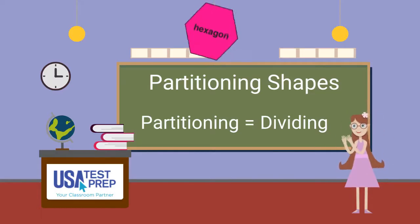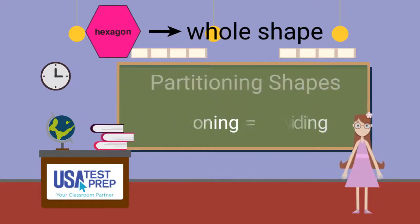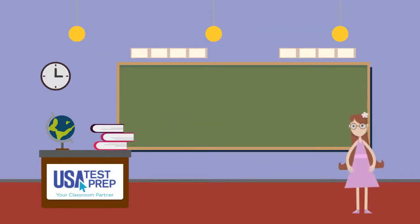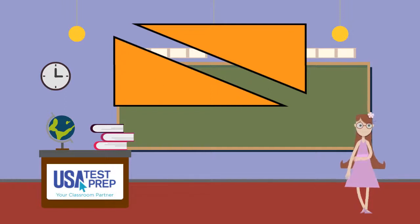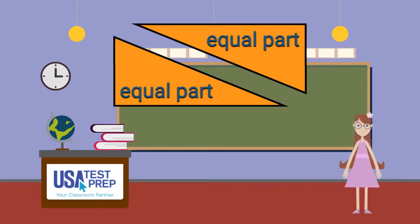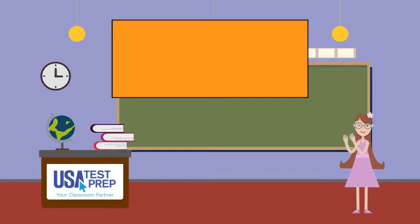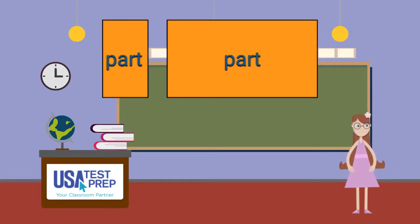When a shape is not partitioned or divided, it is a whole shape. When a shape is partitioned, it is split into parts. Sometimes those parts of a shape can be equal, meaning they are all the same size. Sometimes those parts can be non-equal, meaning the parts are all different sizes.